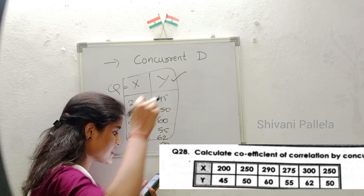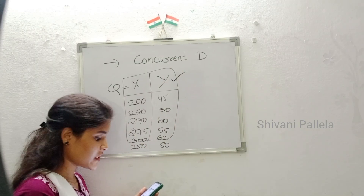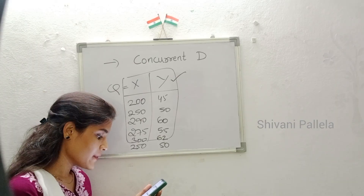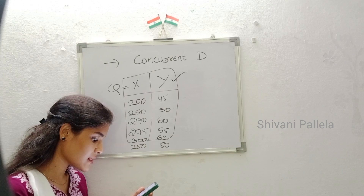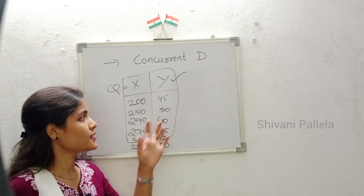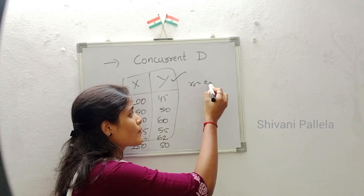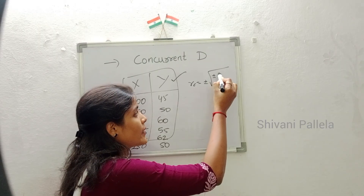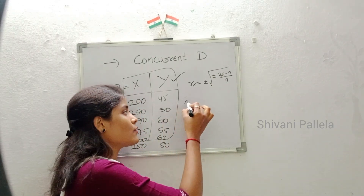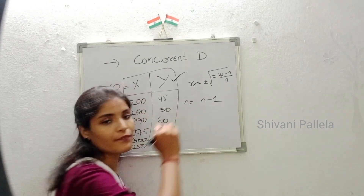They have asked to calculate the coefficient of correlation by the concurrent deviation method. The formula is: rc = ±√(±(2C − n) / n), where n = (number of observations) − 1.